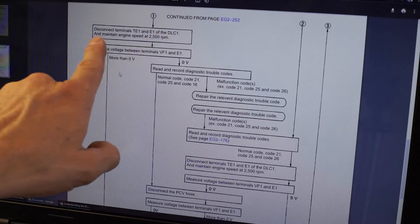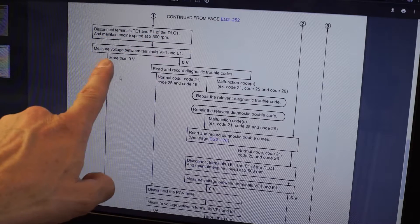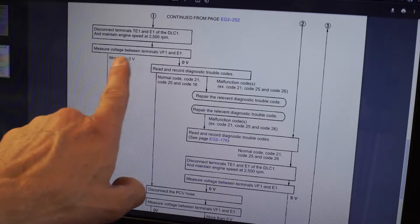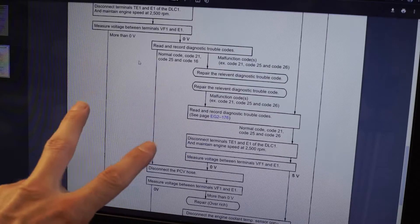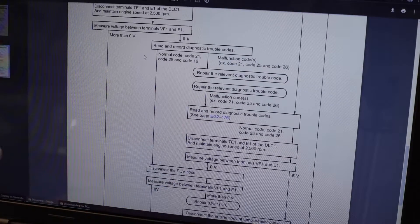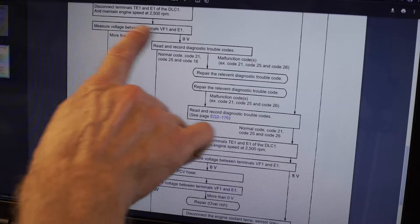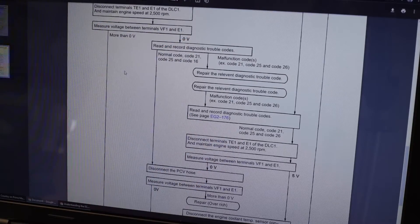Next step, disconnect TE1 and E1 and do the same test again. Now we need to measure the voltage between VF1 and E1. This is going to give us a variable voltage. I've done research on this already, and it looks like this basically tells us the fuel trim.